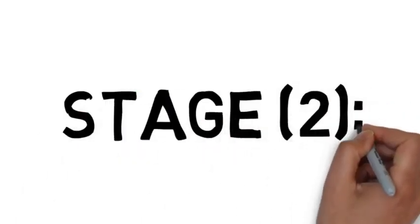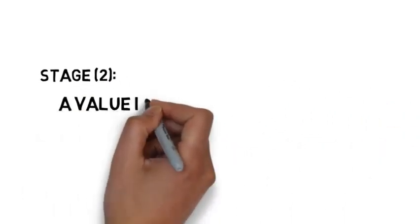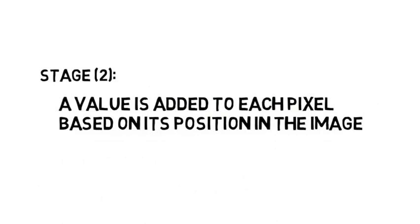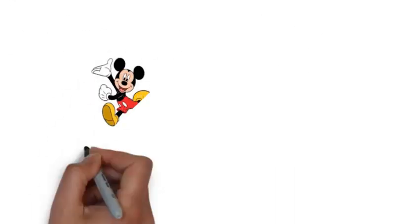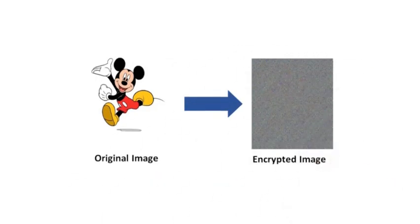The second stage is that a value is added to each pixel based on its position in the image, to guarantee that there is no identical blocks at all, so we can obtain such results.